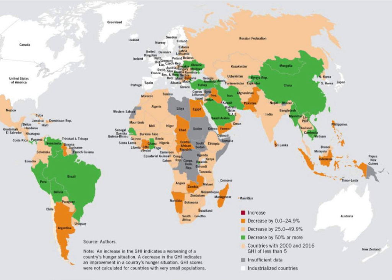with zero being the best score and 100 being the worst, although neither of these extremes is reached in practice. Values from 0 to 9.9 reflect low hunger; values from 10.0 to 19.9 reflect moderate hunger; values from 20.0 to 34.9 indicate serious hunger; values from 35.0 to 49.9 reflect alarming hunger; and values of 50.0 or more reflect extremely alarming hunger levels.